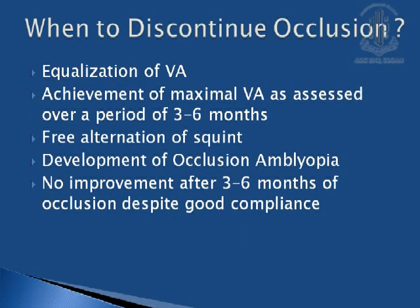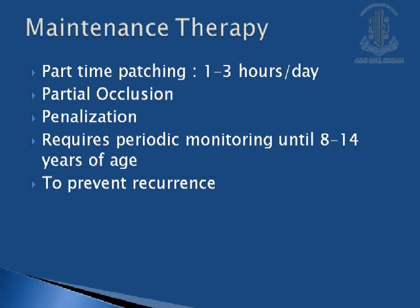When to discontinue occlusion therapy: when one achieves equalization of visual acuity, or if there is achievement of maximal visual acuity as assessed over a period of 3 to 6 months, when there is free alteration in the squint, if there is development of occlusion amblyopia, or if there is no improvement after 3 to 6 months of occlusion therapy despite good compliance. Once the child achieves equal vision, do not stop occlusion abruptly; put the child on maintenance therapy with part-time patching of 1 to 3 hours per day or partial occlusion or penalization, as these help prevent recurrence.